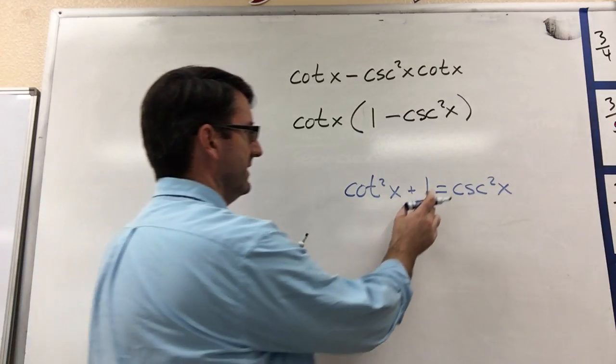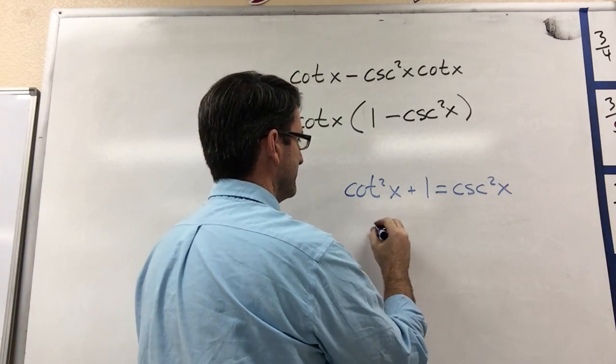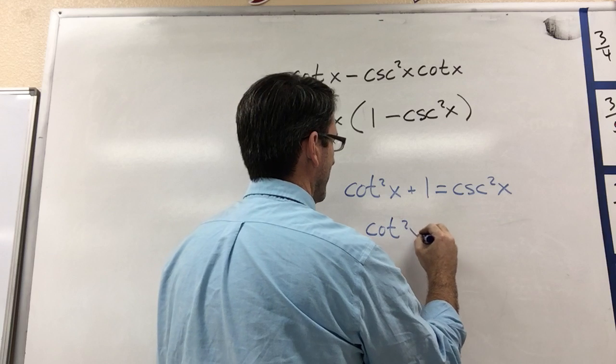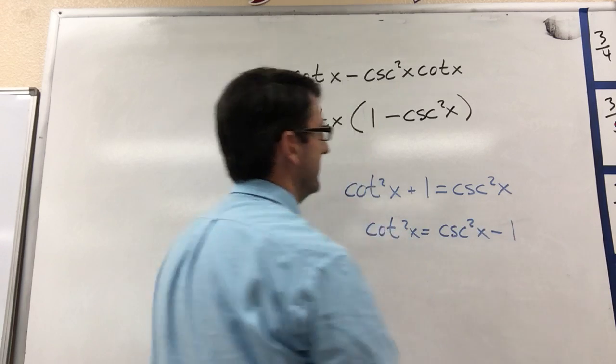So if we move this 1 over to the other side, if we subtracted 1 from both sides, we get cotangent squared x is equal to cosecant squared x minus 1.